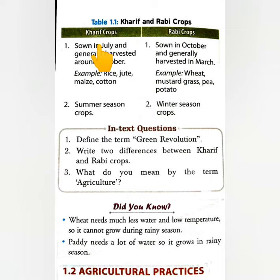Kharif crops are sown in July and generally harvested around October. For example, rice, jute, maize, and cotton are Kharif crops.